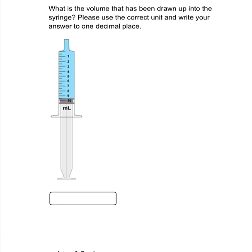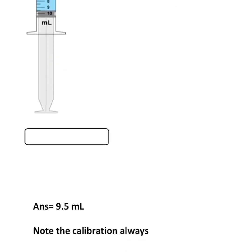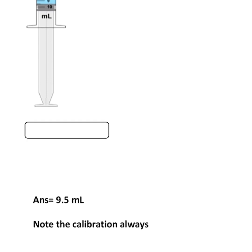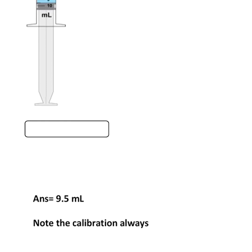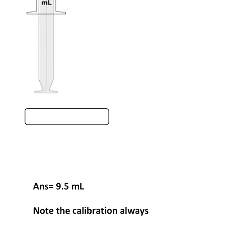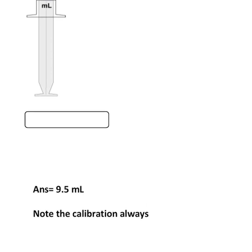They're asking us to provide the correct unit and identify the fluid drawn into the syringe. Looking at the calibrations, we can see that each 1 mL has a 0.5 calibration mark. Starting from the bottom, the figure we get is 9.5 mL — you can see it goes from 9.5 then up to 10. Always start from the bottom to read the calibrations correctly.